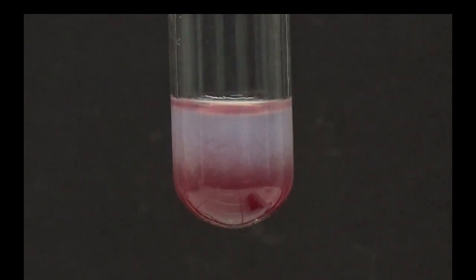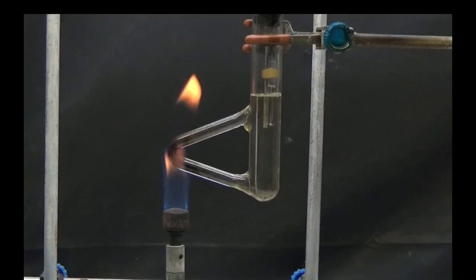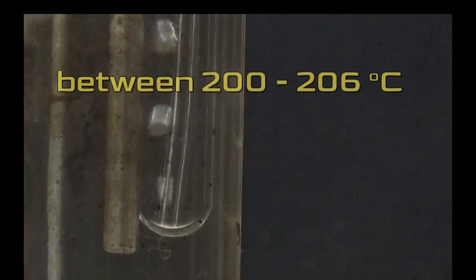To prepare the Brady and nitroprusside reagent, I leave you the link from my video on tests for ketones and aldehydes. The final test is the boiling point, which in our test yielded a result between 200 and 206 degrees.